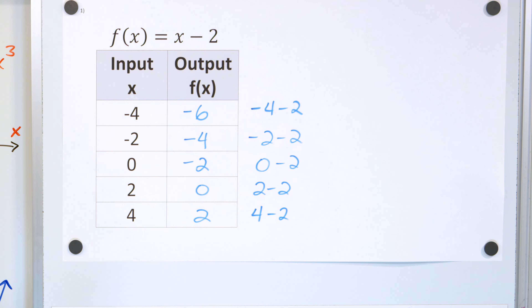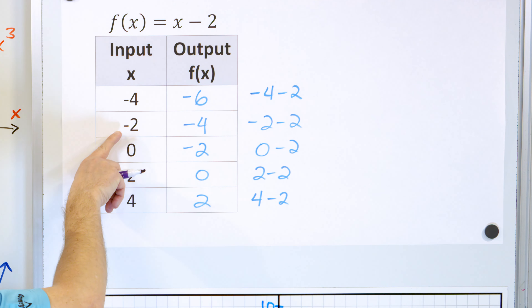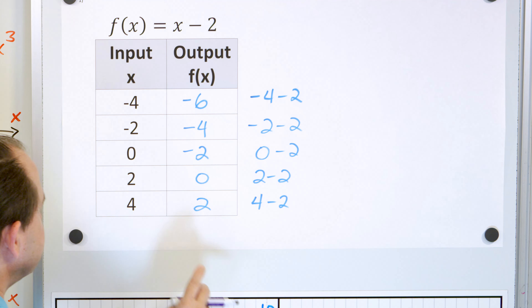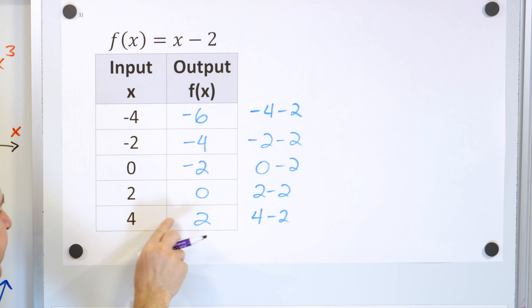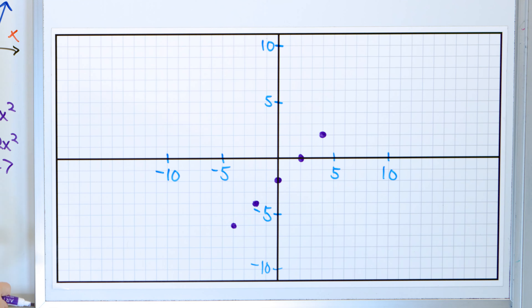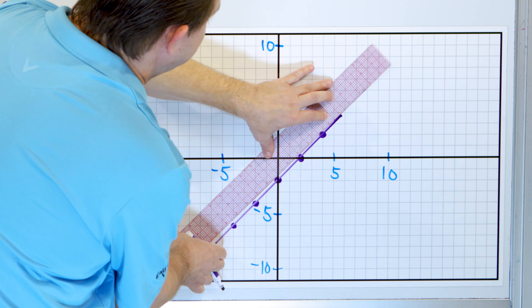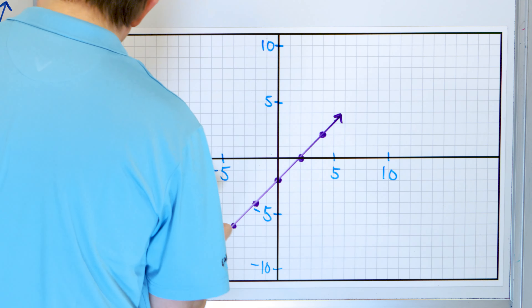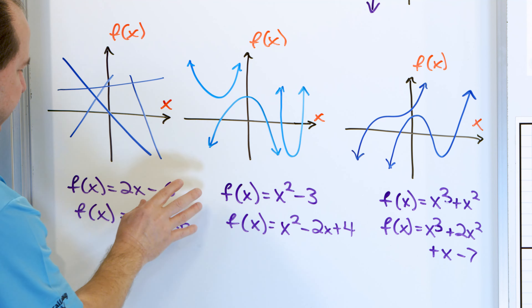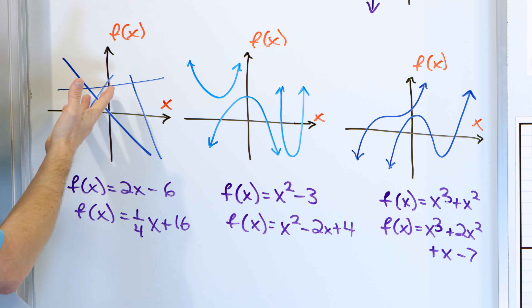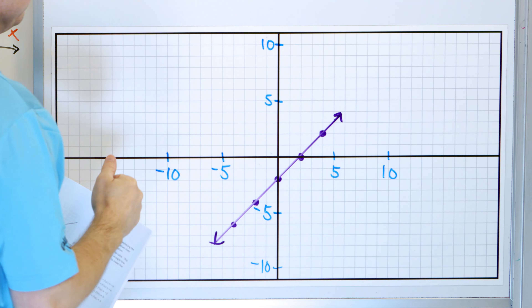Now let's plot this stuff — we should get a line if we've done it correctly. The first point is at negative 4 comma negative 6. Next is negative 2 comma negative 4. Then 0 comma negative 2. Then 2 comma 0. And finally 4 comma 2. You can see this definitely forms a nice line. We draw a line through all the points. The equation is f of x equals x minus 2, and we have a line that's shifted down from the origin with some steepness — but it looks like a line.